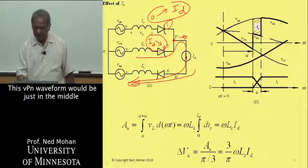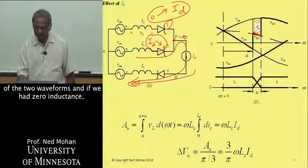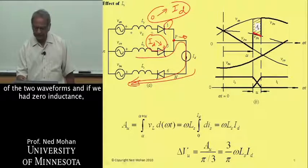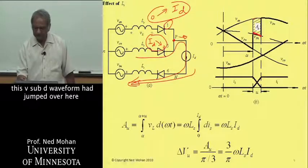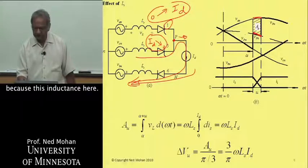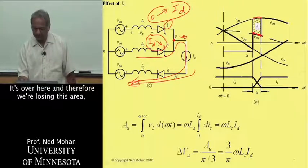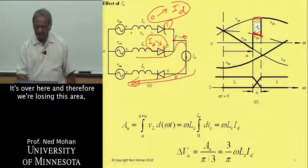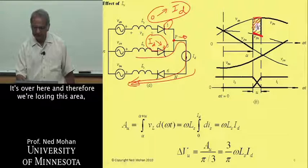This VPN waveform would be just in the middle of the two waveforms. And if we had 0 inductance, this V sub d waveform would have jumped over here. But because of this inductance here, it's over here. And therefore we are losing this area, A sub u, in terms of volt radians.